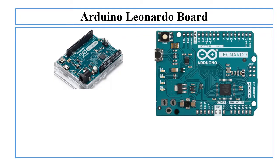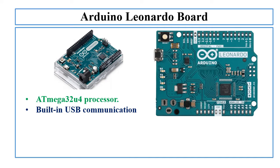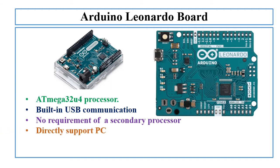The fourth board is the Arduino Leonardo board. Arduino Leonardo differs from all preceding boards because it uses the ATmega32U4 processor, and this board has inbuilt USB communication which eliminates the requirement of a secondary processor. The most exciting feature of the Leonardo board is that it directly supports the PC — it can operate as an actual USB device. The Leonardo can appear to a computer as an HID, or human interface device, such as a mouse or a keyboard, in addition to serial and COM ports.